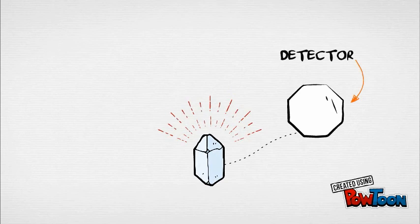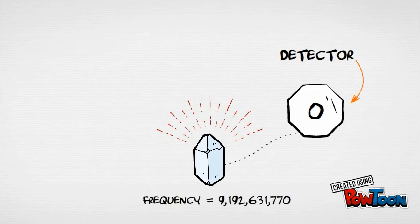A detector at the end of the tube counts how many cesium atoms reaching it have changed energy states. The more finely tuned is the radio frequency, the more cesium atoms change state. The detector feeds information back into the radio wave generator and synchronizes the frequency of the radio waves with the peak number of cesium atoms striking it.